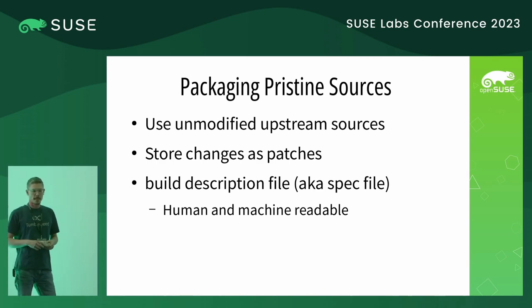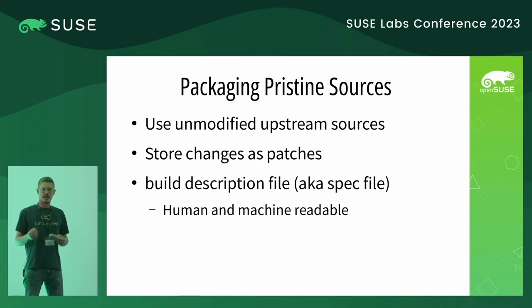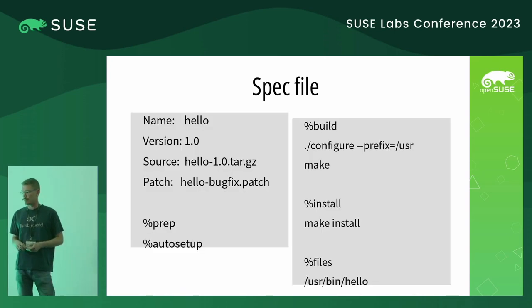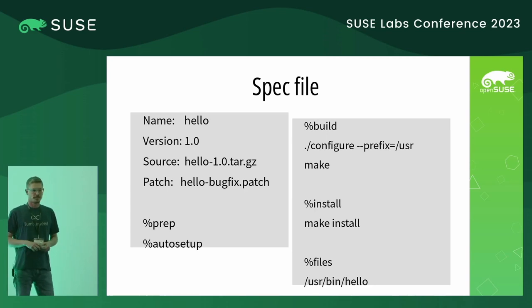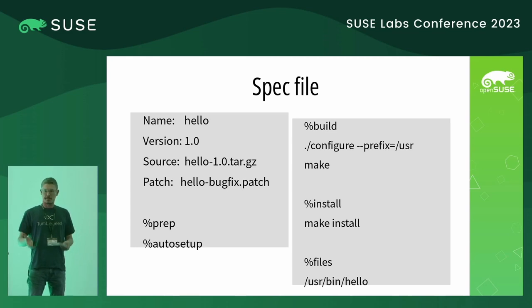Packaging pristine sources is a concept that even predates RPM. The idea is that we take the unmodified upstream sources, so usually the tarball. We store our changes as individual patches next to the sources, and then we apply them. How they get applied is specified in a build description file, aka a spec file. That is a file that is quite easily readable by humans and also the machine. You declare the name of the package, the version, the actual upstream sources, and then a list of patches to apply.